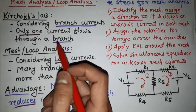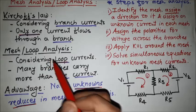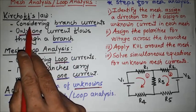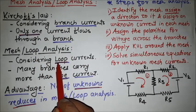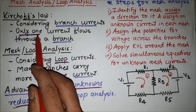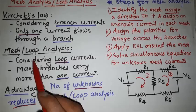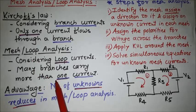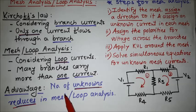Now we are going to learn the mesh analysis or loop analysis. We are differentiating mesh analysis from Kirchhoff's law: in Kirchhoff's law we consider branch currents, but in mesh analysis we consider loop currents. Through a branch, only one current flows in Kirchhoff's law, but in mesh analysis one or more currents can flow through one branch. One advantage of mesh analysis is that the number of unknowns is reduced compared to Kirchhoff's law.